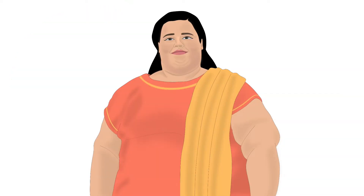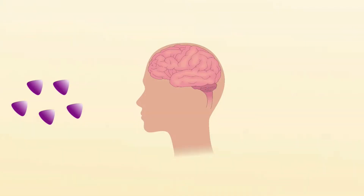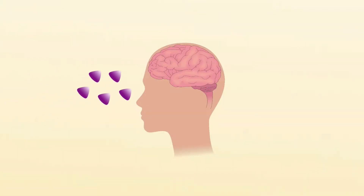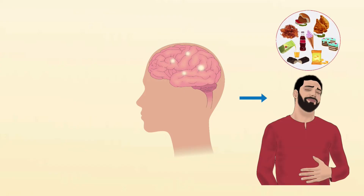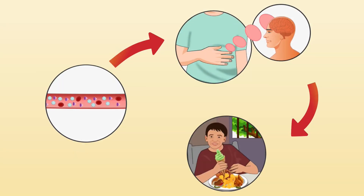Another major problem associated with high insulin levels is obesity. Insulin is a hunger hormone. Excess unused insulin sends signals to the brain to supply glucose to the body. As a result, hunger is stimulated. Even if a person has just eaten, their body will crave for more food.